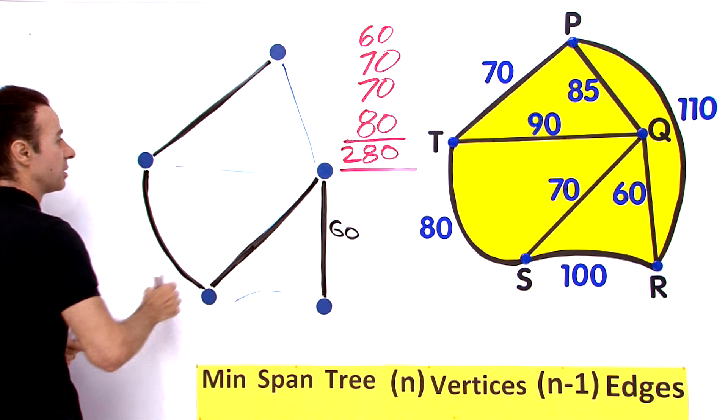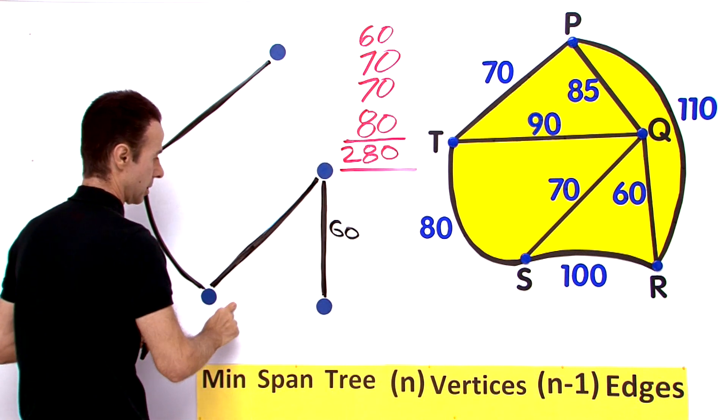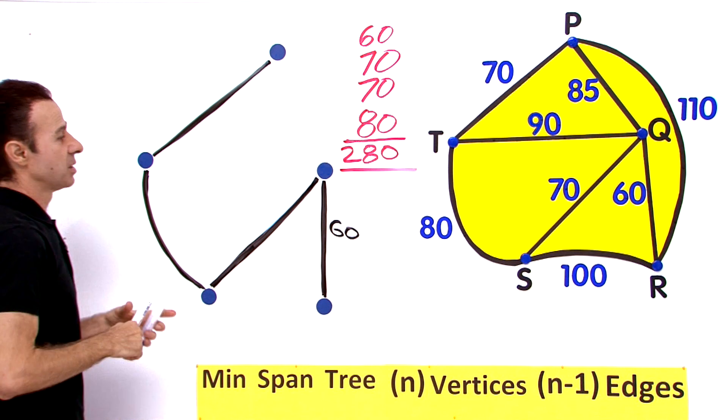So there is our minimum spanning tree. Let me just get rid of that one, and that one, and that one. That is our minimum spanning tree.